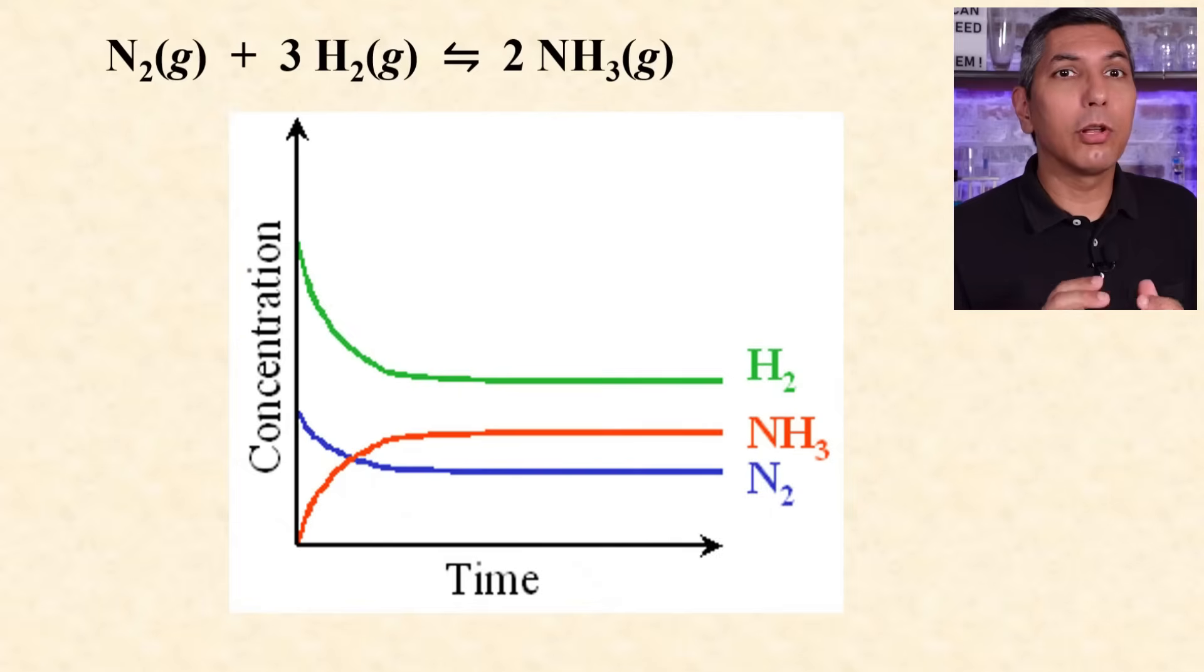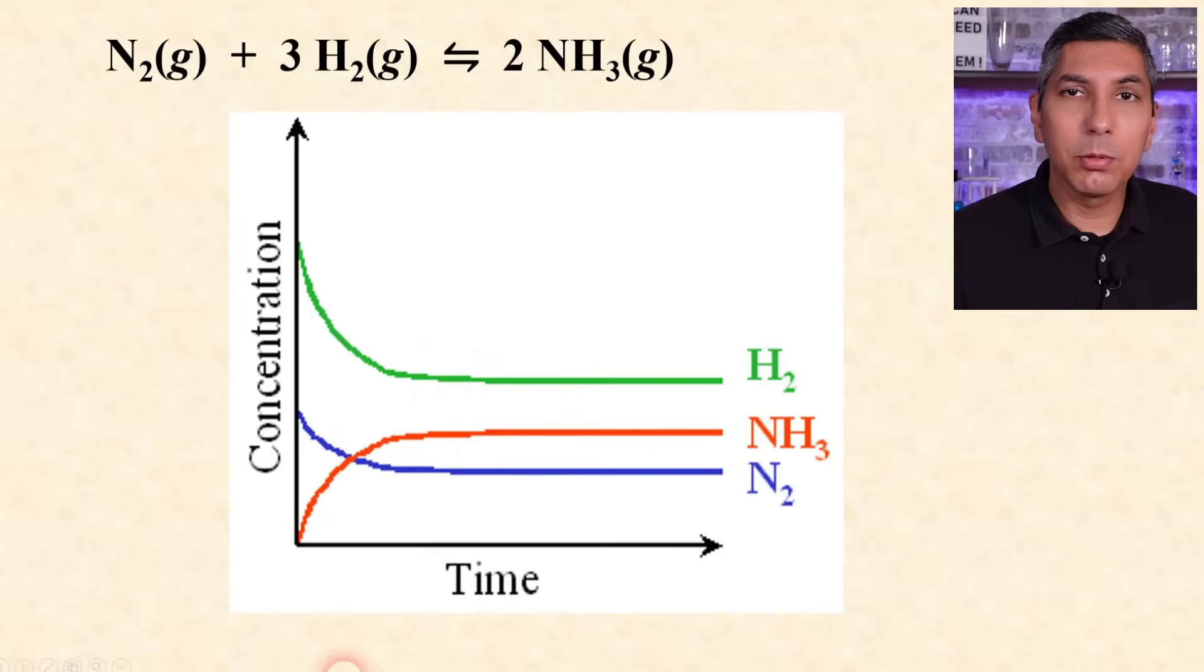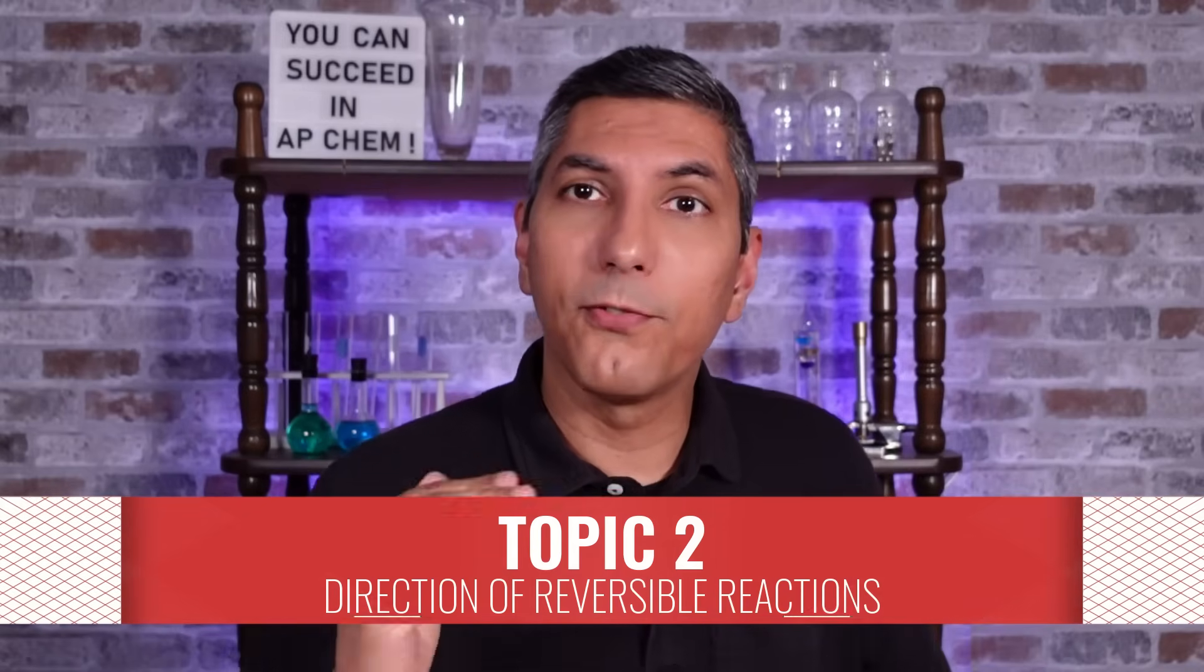For most reactions, the rate starts out fast and eventually slows down and levels out. Reversible reactions eventually reach a point where the rate of the forward reaction is equal to the rate of the reverse reaction. That's equilibrium. Now notice, the reaction hasn't stopped. You won't see the concentration of anything changing, but that's just because the net change is zero.